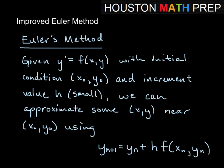Having already looked at Euler's method, where we can approximate the values of some point near an initial condition given information about the derivative, and using small horizontal increments of value h to move from x sub 0 to a specific x value. We use this formula for Euler's method: y sub n plus 1 equals y sub n plus h times f of x sub n, y sub n — based on the slope of a tangent line at the initial condition.